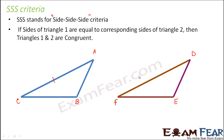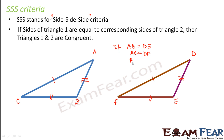So if side AB is equal to side DE, this side is equal to this side, and this side is equal to this side — this is how we denote that two sides are equal. Here you have three tick marks and here also three tick marks, meaning AB equals DE. So if all corresponding sides are equal, then we say triangle ABC is congruent to triangle DEF. This is the SSS criteria.